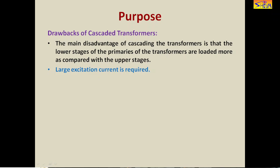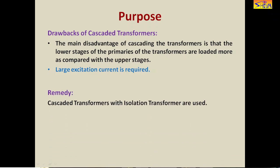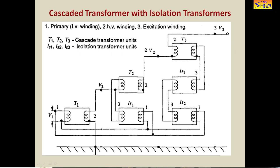To overcome these drawbacks we are using cascaded transformers with isolation transformers. Now let us see how this scheme works. This is the circuit diagram. Here T1, T2 and T3 are the cascaded transformer units, the same as in the previous scheme.